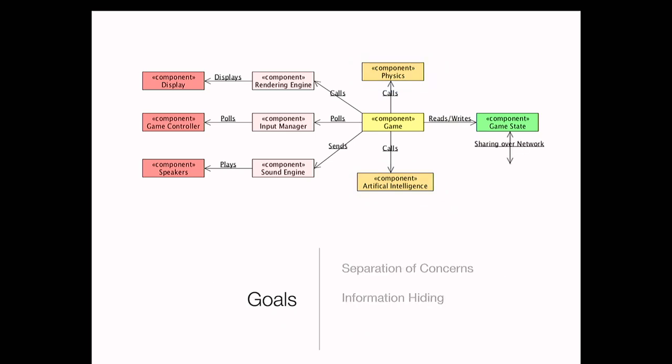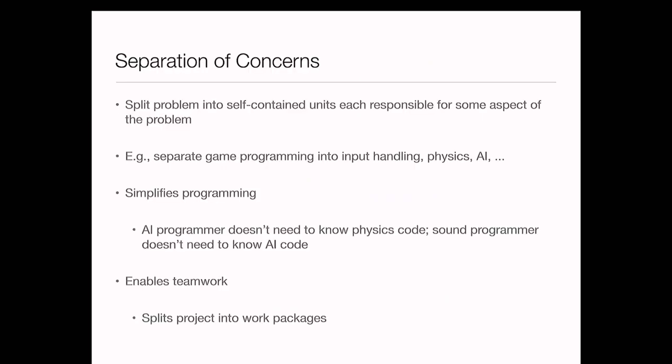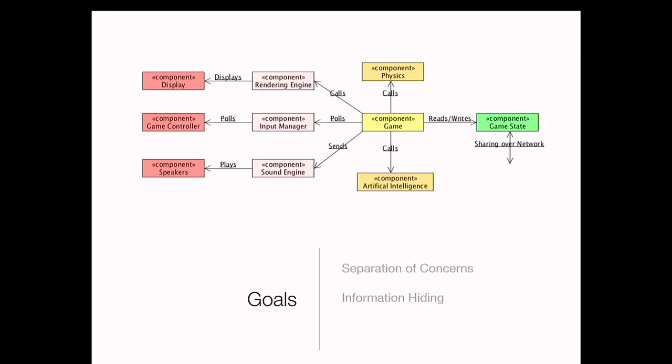So why do we do all this? It's because we want separation of concerns and information hiding — terms you should have seen by now. Separation of concerns: you want to split a problem into self-contained units, each responsible for some aspect of the problem. The physics component is responsible for the physics of the game; the AI component is responsible for the AI.